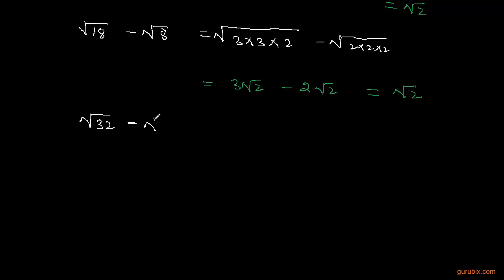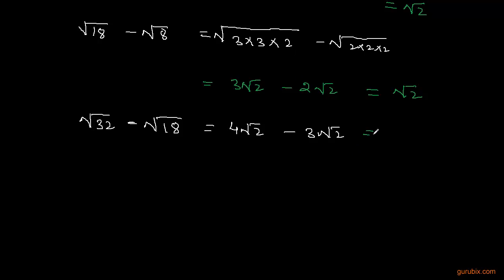Now we subtract the third term from the fourth term. The fourth term is √32 and the third term is √18. We can write √32 as 4√2 and √18 as 3√2. So we get √2 again.